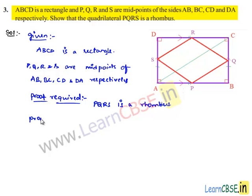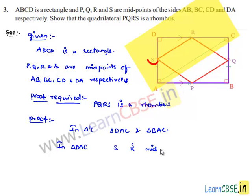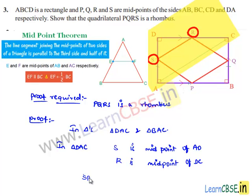Now let us move on to the procedure. In the first step, let us consider triangle DAC. In triangle DAC, S is the midpoint of AD and R is the midpoint of DC. So by the midpoint theorem, we can say that SR is parallel to AC and SR is equal to half of AC.